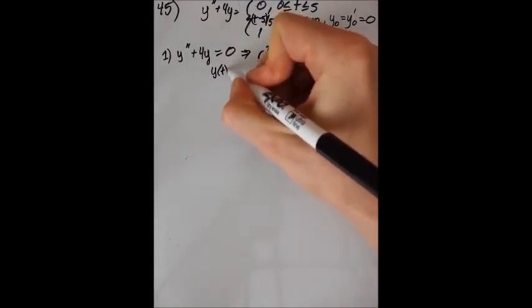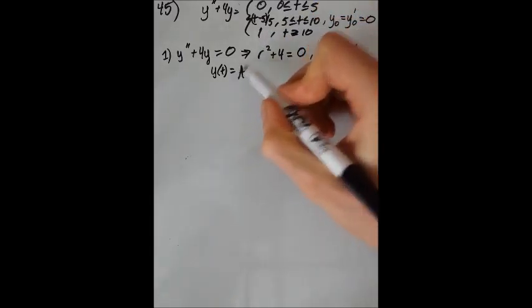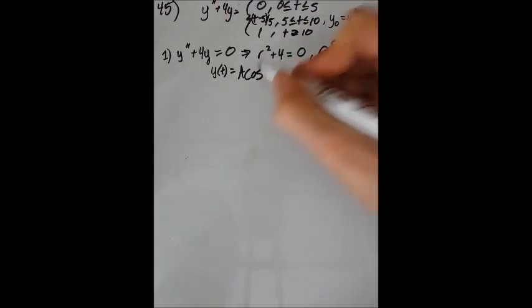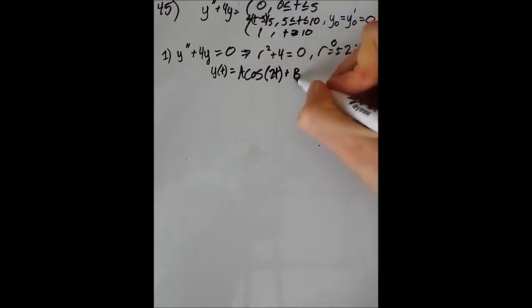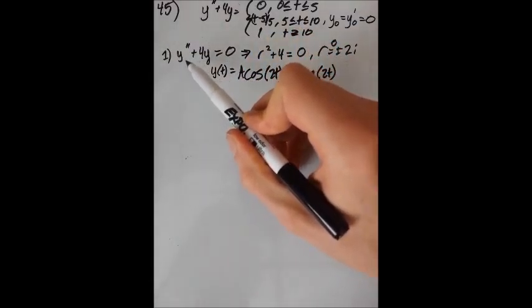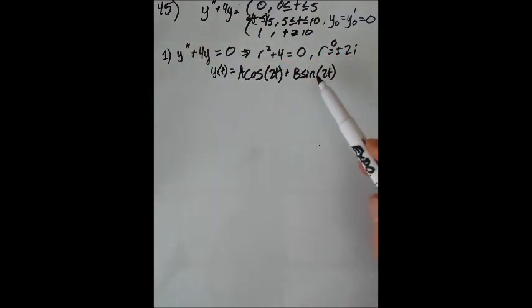So plugging that in, we say that y of t equals, and now we have a e to the a, different a than this. This a right here, which is 0. So e to the 0 is 1, times cosine of 2t, plus b, and then same thing here, e to the 0, which is 1, times sine of 2t. And so we can see that this is just our standard oscillatory solution, which you might have been able to see by here. y double prime equals minus omega squared y, where omega is now in here.